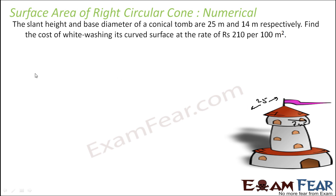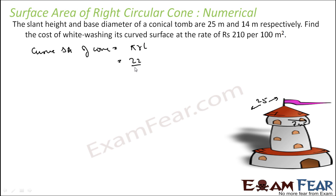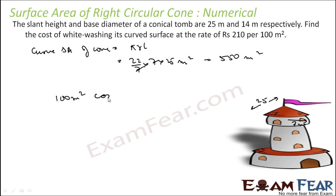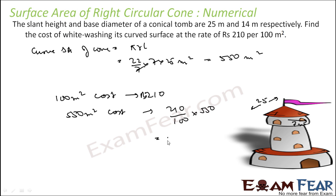We need to find the cost of whitewashing its curved surface area. CSA of cone = pi × r × l = (22/7) × 7 × 25 = 550 meters square. The cost of whitewashing is 210 per 100 m², so cost = (210/100) × 550 = 1155 rupees.